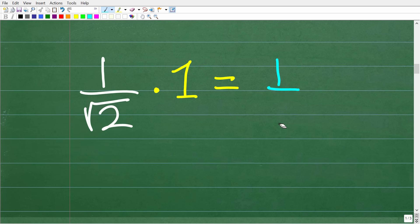This is what we call the multiplicative identity. So what we're going to do is take this value and multiply it by one, but we're going to use a nice fancy one.